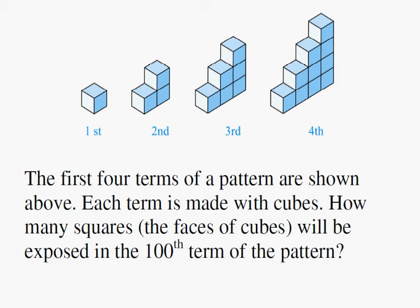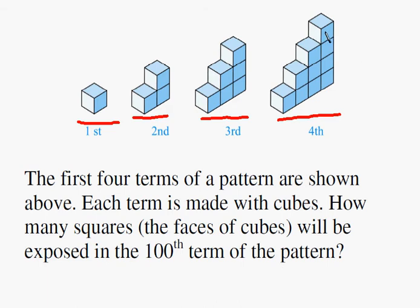The first term is made with one cube, the second term with three, the third term with six, and the fourth term with ten. We can find that the hundredth term will be a stack of one, two, three, four, all the way down to one hundred cubes — just like the fourth term is a stack of one, two, three, four.